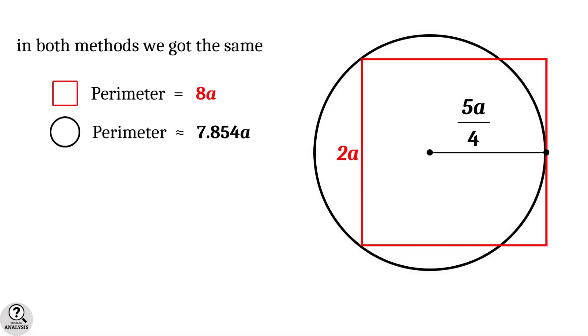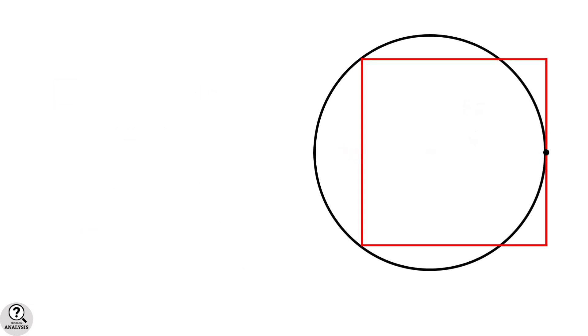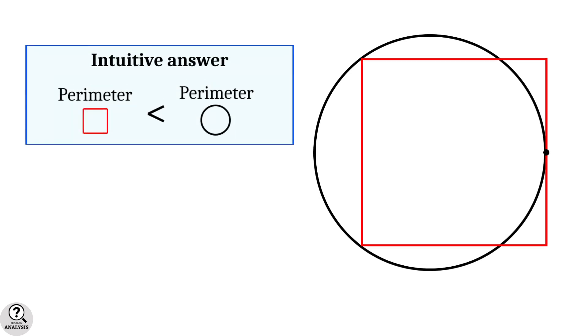So in both methods, we got the same answer. That is, the square has the larger perimeter than the circle. And that is the solution we are looking for. Remember our intuitive approach? By intuition, we told that the circle may have the larger perimeter.